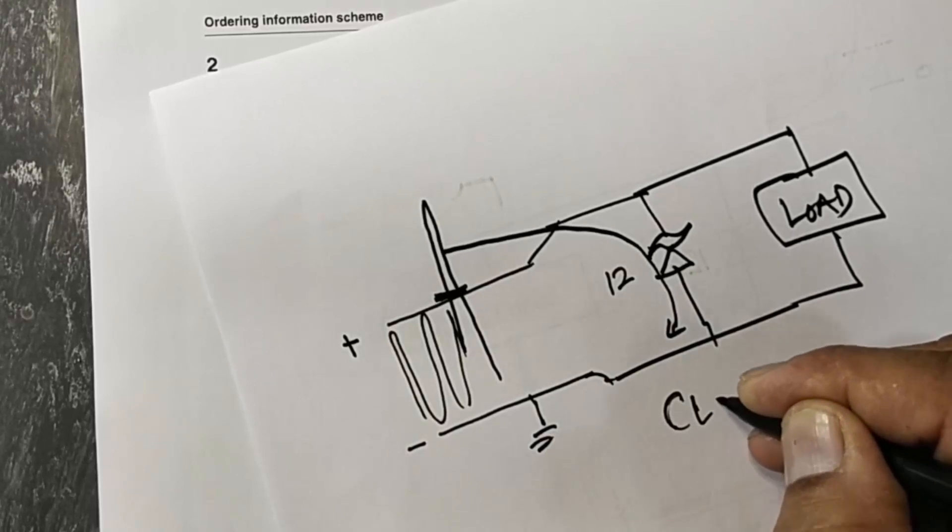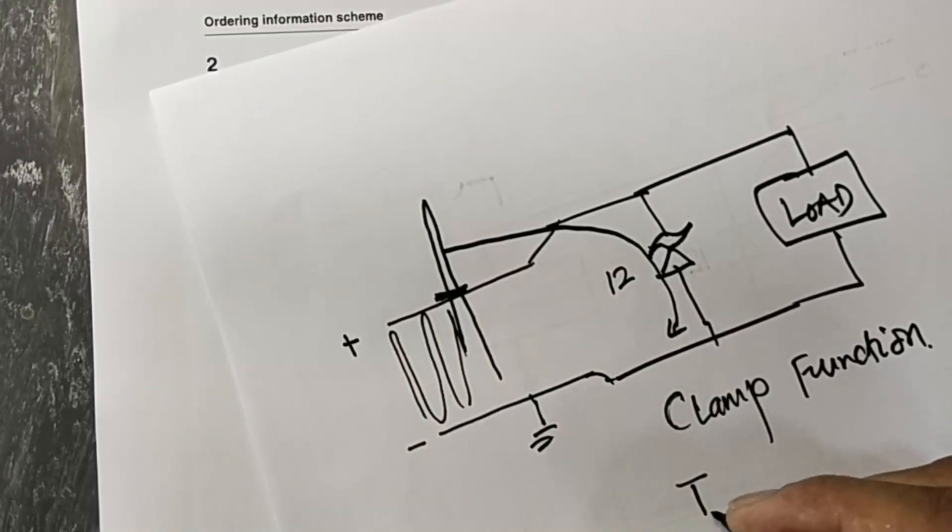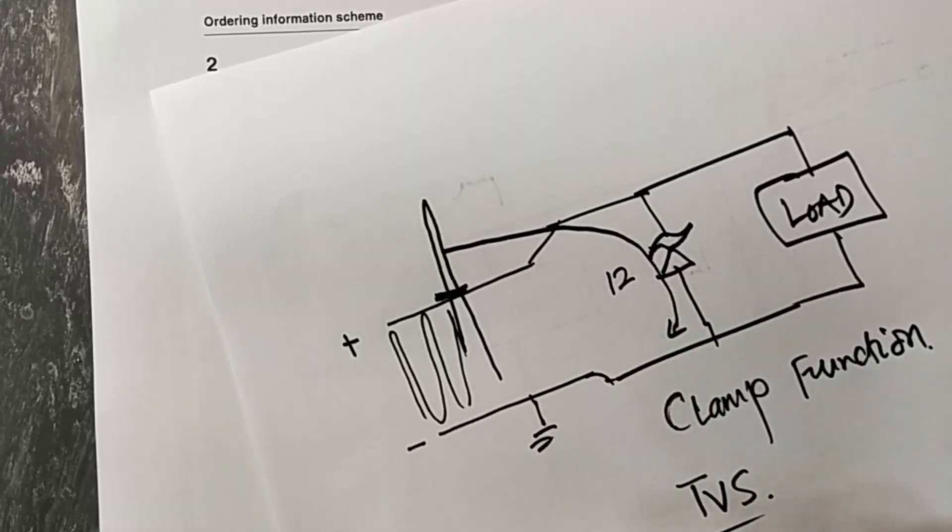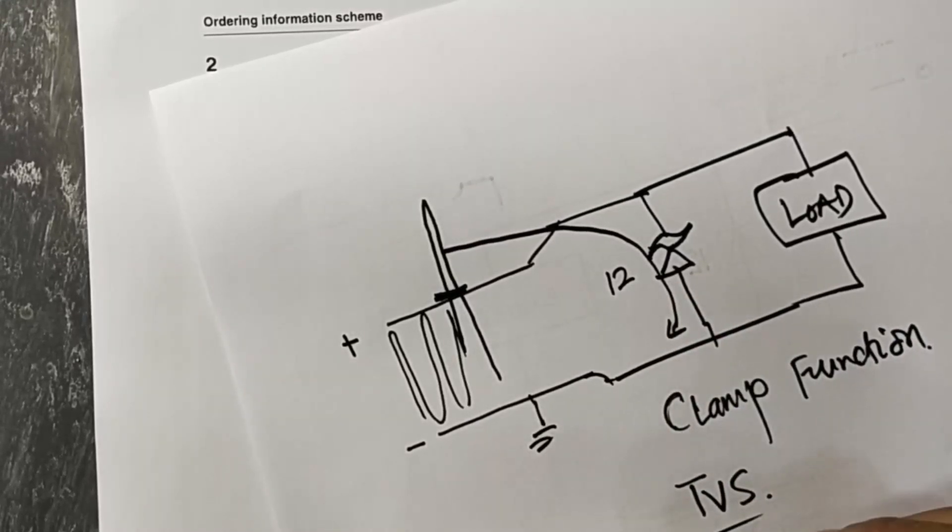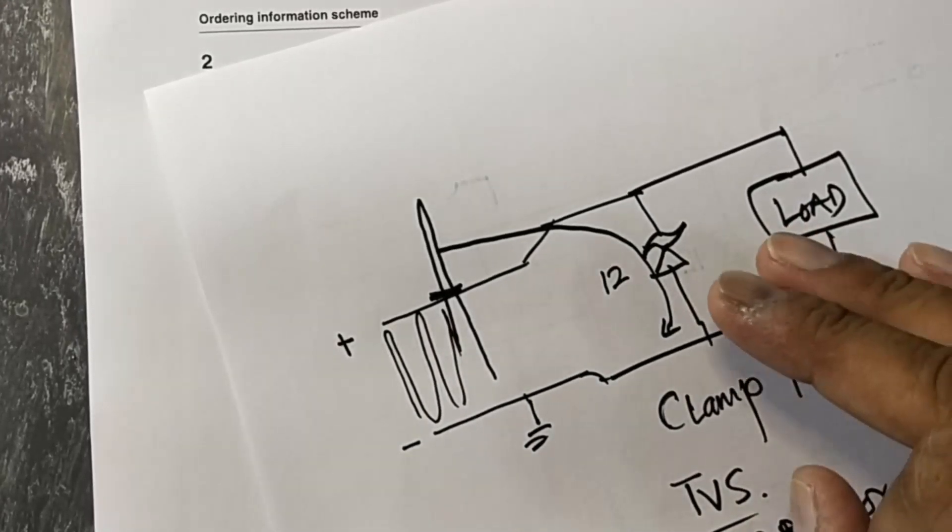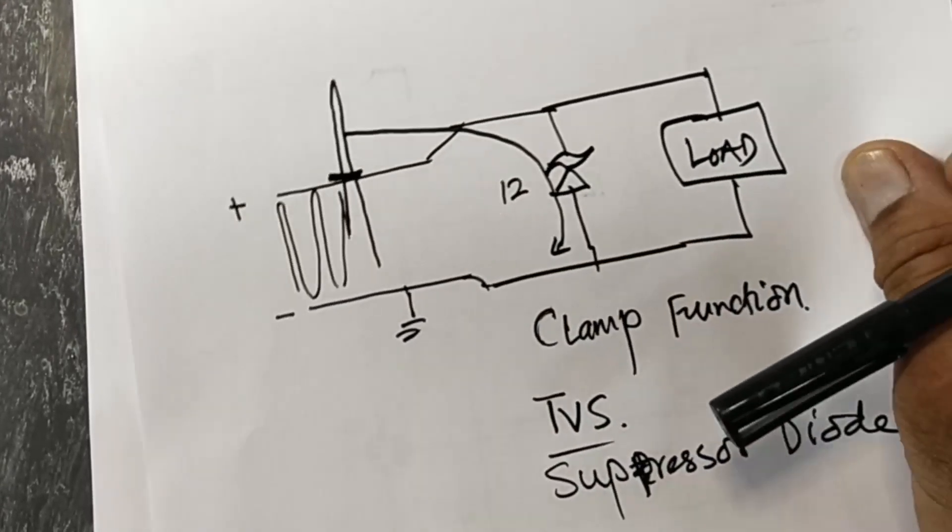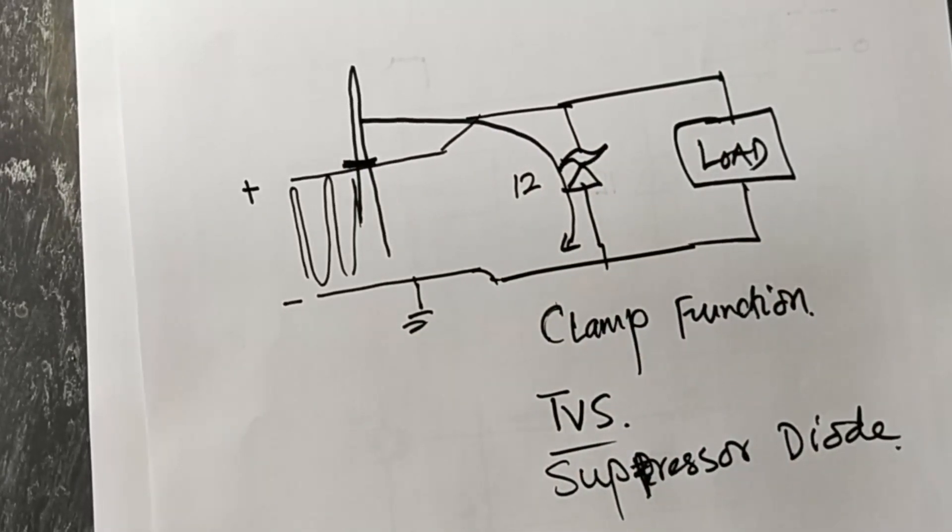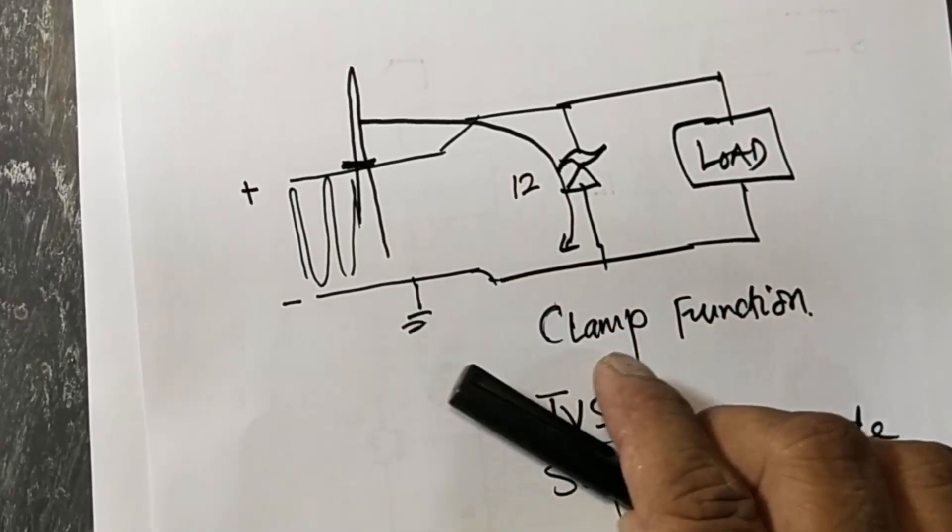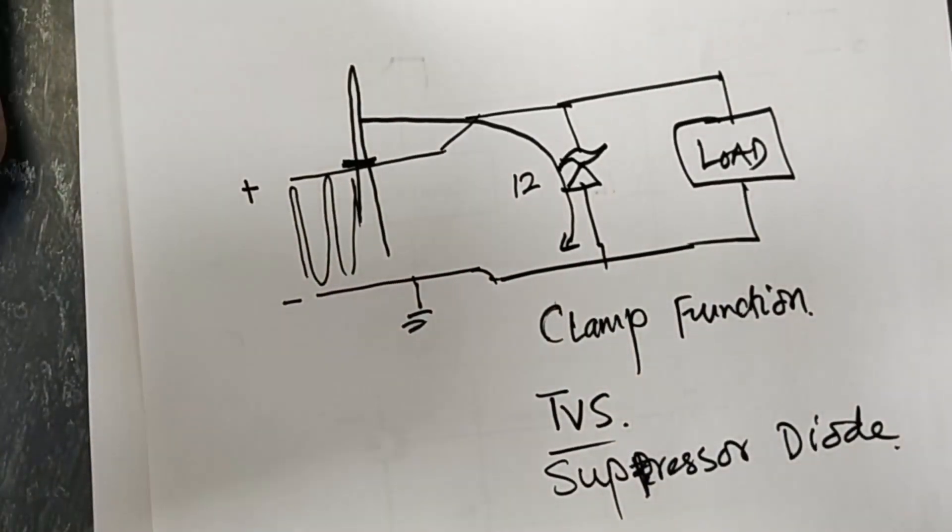So it is clamp function. It is called transient voltage suppression. So this diode is also named suppressor diode. It is also called voltage suppressor, it is also called protection diode. So it is a type of zener. I hope this video is informative. If it is informative, hit the like button. If you have any question, please let me know in the comment box. Thanks for watching. Assalamualaikum warahmatullahi wabarakatuh.